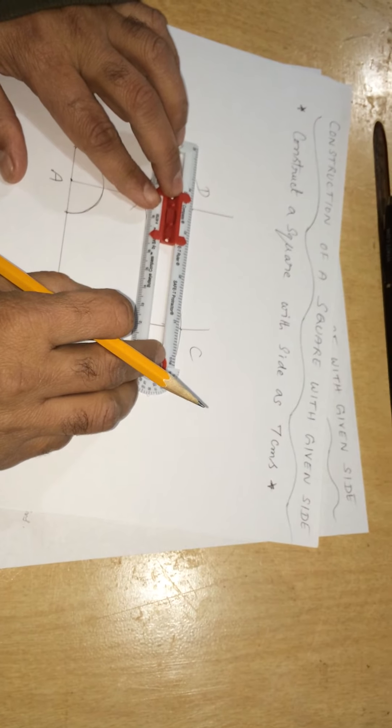I draw another arc to cut the previous arc at C. So, I join B and C.